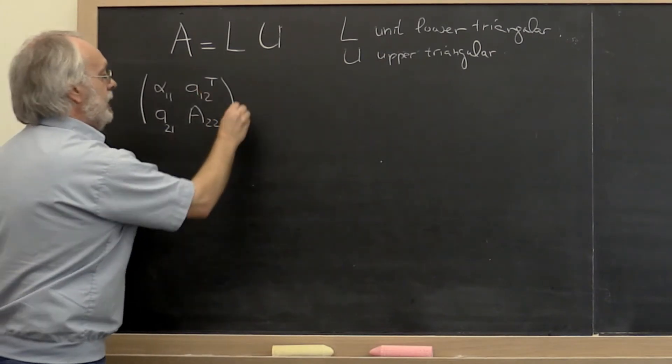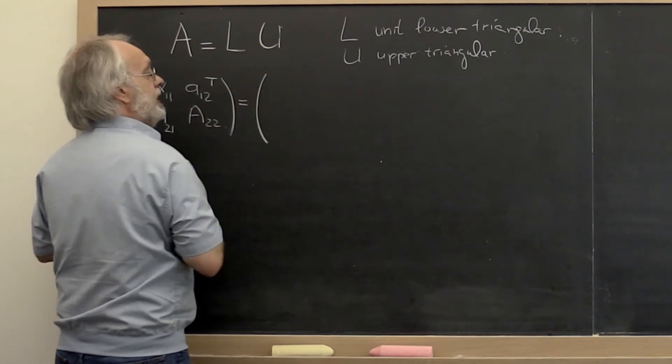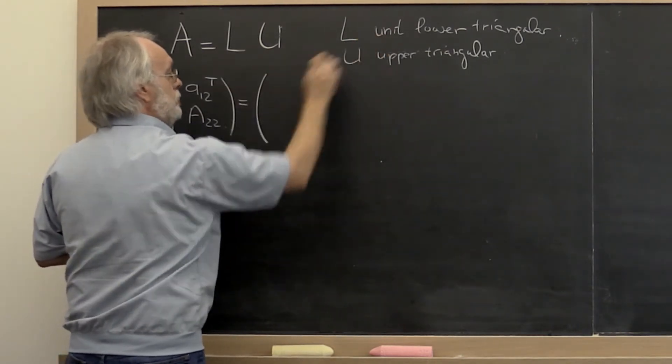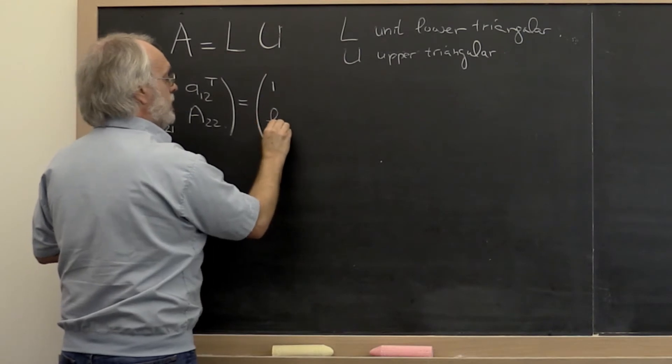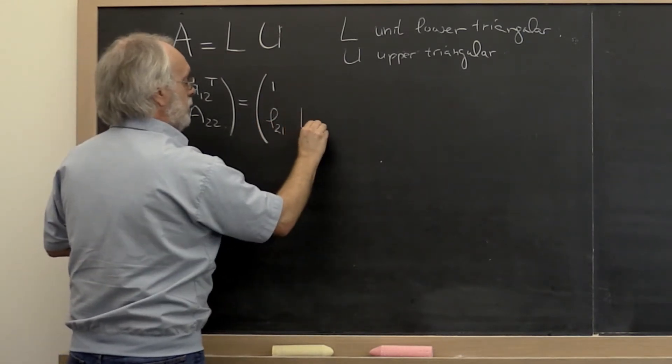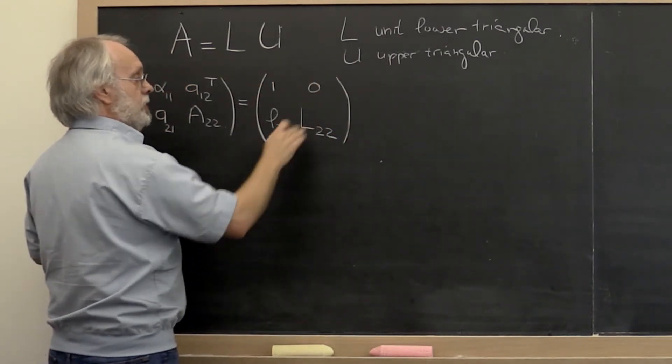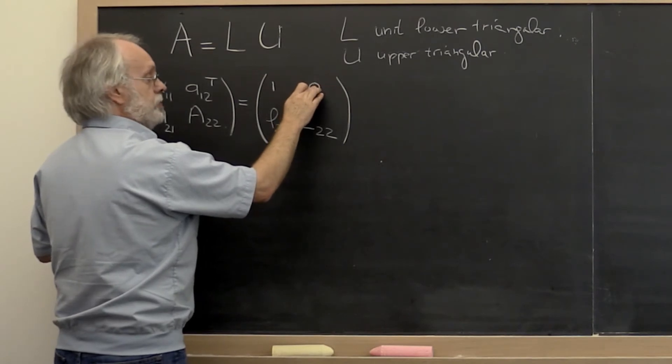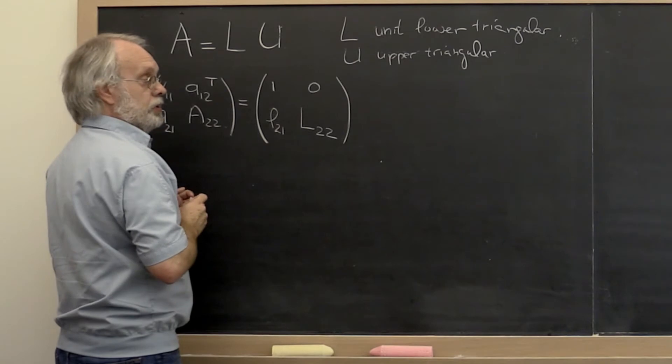Now we can do the same thing for L and U, exposing the top left entry of L. But because it's unit lower triangular, we know that's a 1. Then we can call the rest of that column L 2 1 and the rest of the matrix L 2 2. Because it's a unit lower triangular matrix, we have a row of 0 sitting here, and L 2 2 itself is again unit lower triangular.